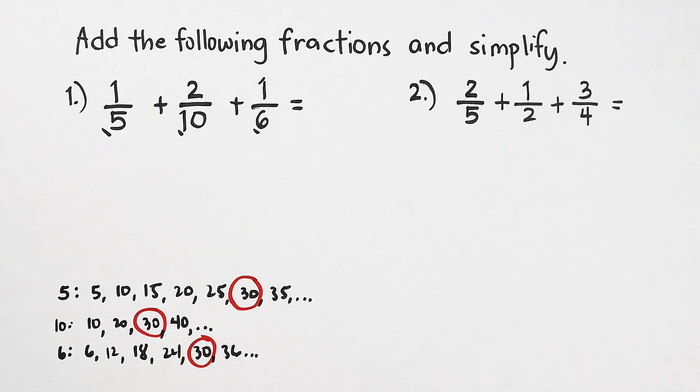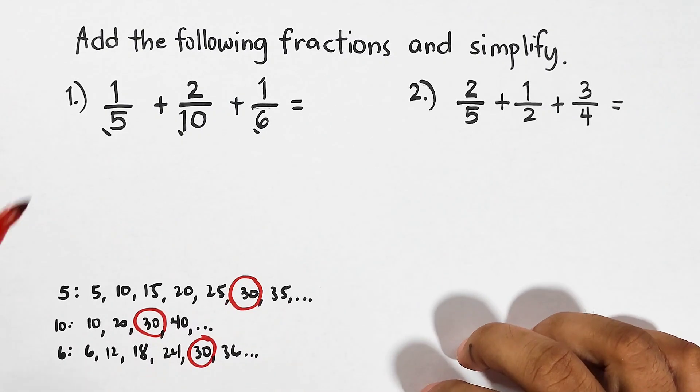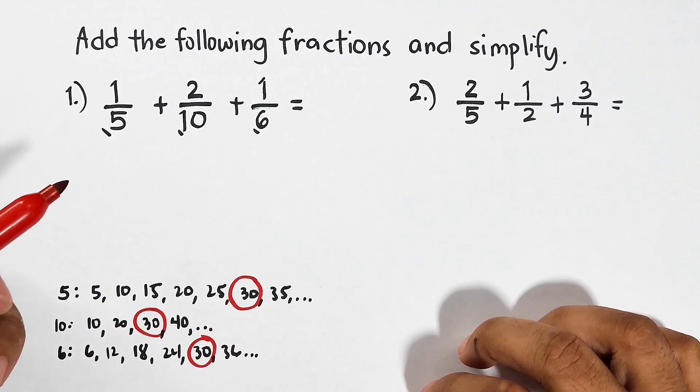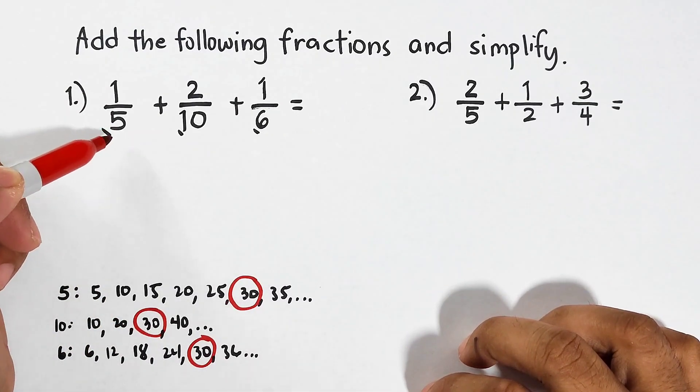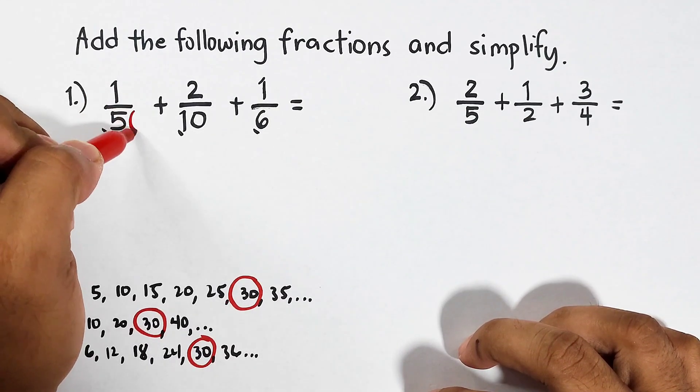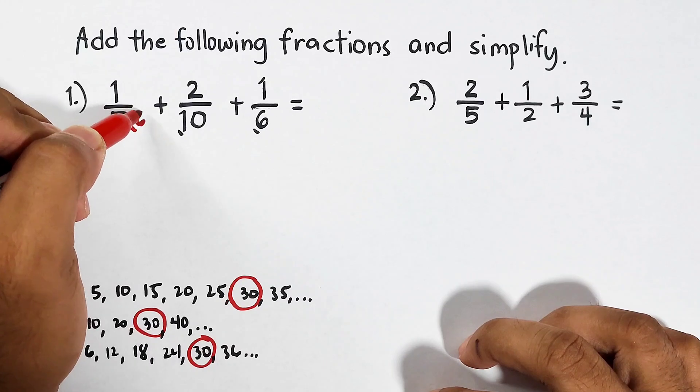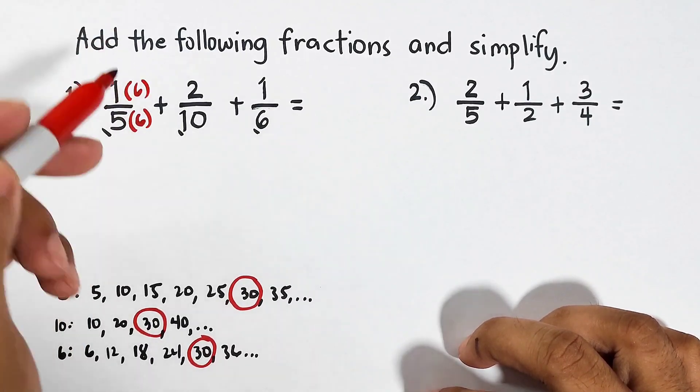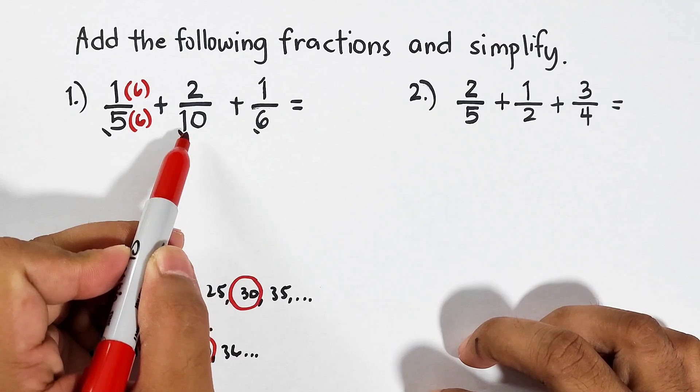Now this 30 will serve as the LCD of 5, 10, and 6. What we need to do next is we will think of a number that we need to multiply by 5 to make it 30, and definitely that is 6. We will multiply the denominator 5 by 6 and also its numerator.